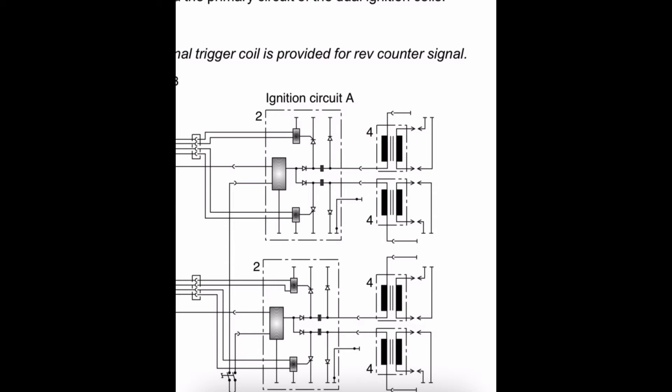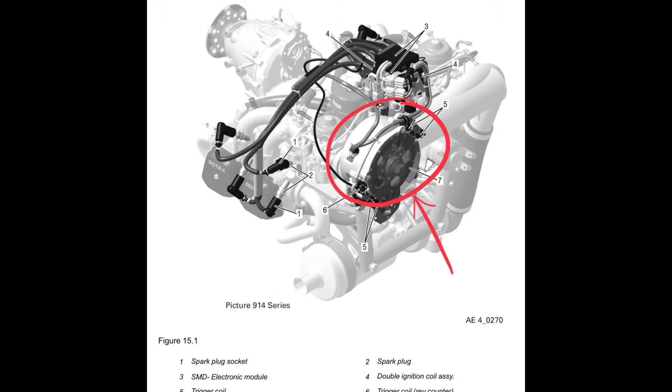The first thing we'll look at is the internal generator. Now, the generator will simply convert mechanical energy into electrical energy. And in the case of the Rotax engine, it produces an alternating current that's very similar to a magneto. And because it's geared to the engine, it will allow sparks to fire even if we lose our battery or lose our alternator. So, how exactly is this generator producing a current?